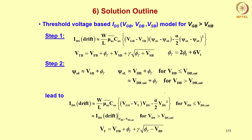When you do that, you end up with the expression for the square law model. What has happened is Vdb minus Vsb has been put here as Vds, and this term is the same as this term. For Vds greater than Vds_sat, you use the same expression but replace Vds by Vds_sat.